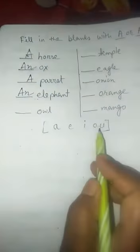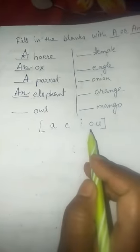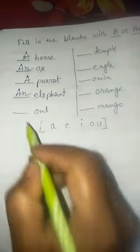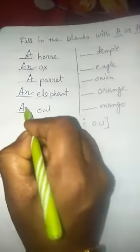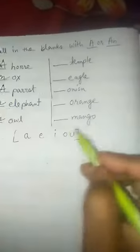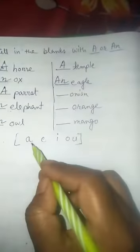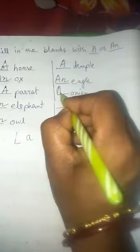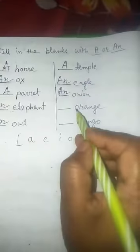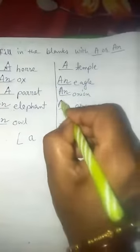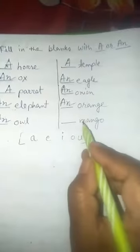Elephant: e is vowel, so an. Owl: o is also here, o is vowel, so we put an. Then t is not here, t is consonant, so we put here a for temple. Eagle: e is here, an. Onion: again o is vowel, so an. Orange: o is also vowel, so we put here an.